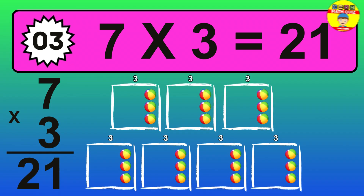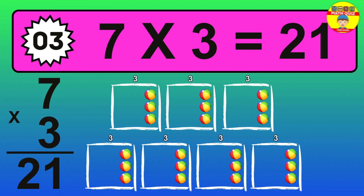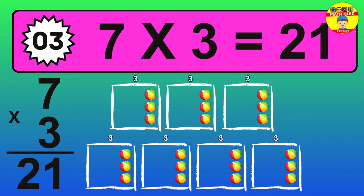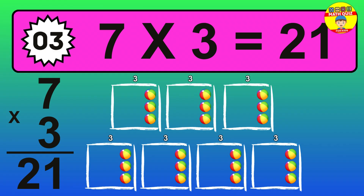The answer is 7 times 3 is 21. To calculate, we have 7 groups with 3 balls each one. So, how many balls do we have? 21 balls.